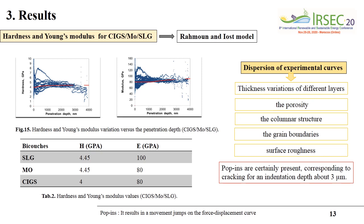Figure 15 shows a dispersion of experimental curves. This means that thickness variation of different layers, the porosity, the columnar structure, the grain boundaries, and surface roughness are all contributing factors. Pop-ins are certainly present, corresponding to cracking at an indentation depth of about 3 micrometers.